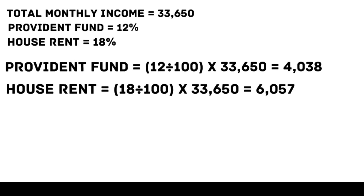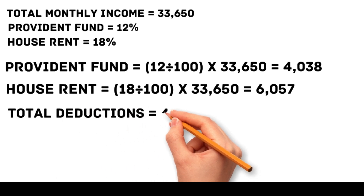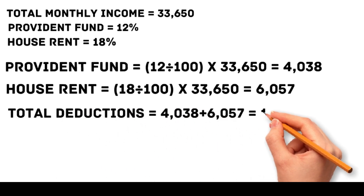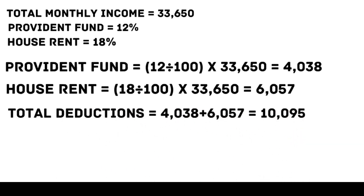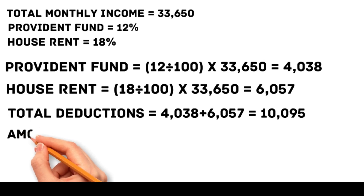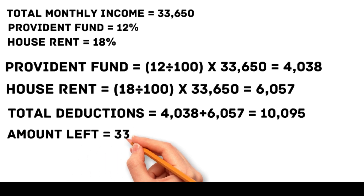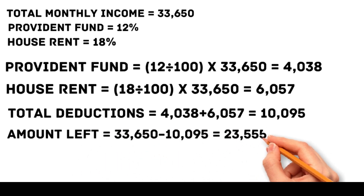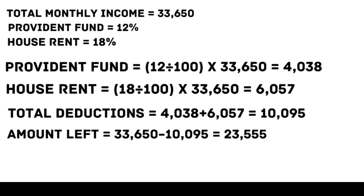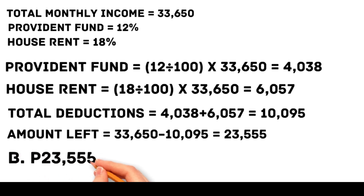We sum these amounts: total deductions = 4,038 + 6,057 = 10,095. Finally, we subtract this total from the monthly income: amount left = 33,650 − 10,095 = 23,555. Therefore, the correct answer is b, 23,555 pesos.